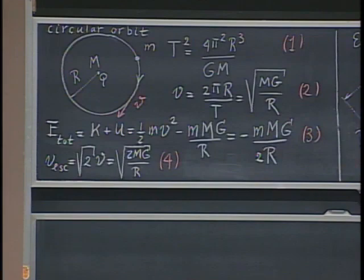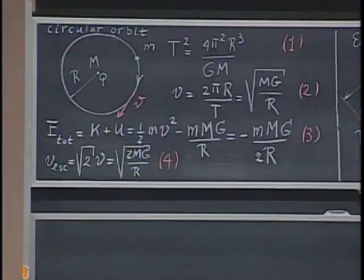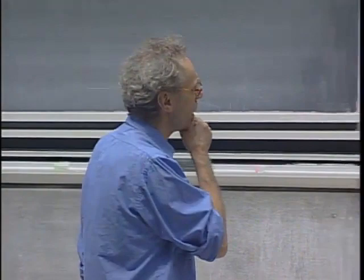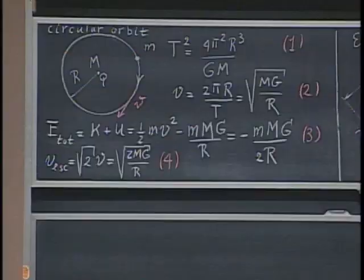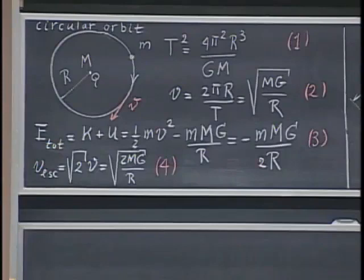We know how to derive the time it takes to go around. We found that by setting the centripetal force on little m equal to the gravitational force. The velocity in orbit also follows through the same kind of reasoning. Then we have conservation of mechanical energy: the sum of kinetic energy and potential energy is constant. We defined potential energy to be zero at infinity, which is why all bound orbits have negative total energy.